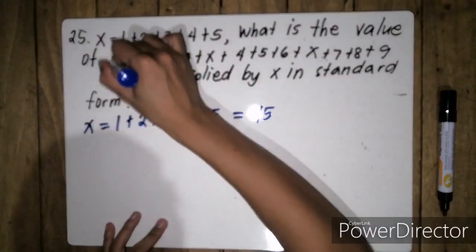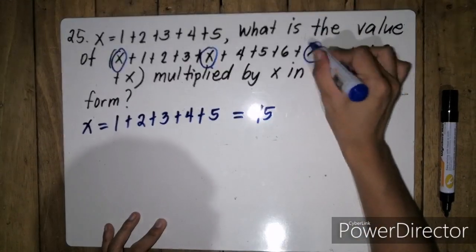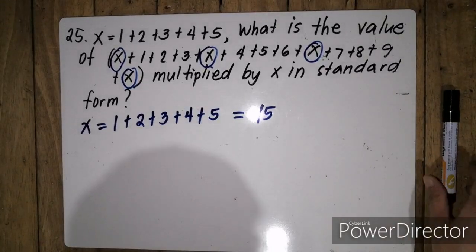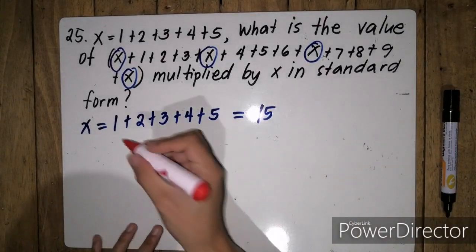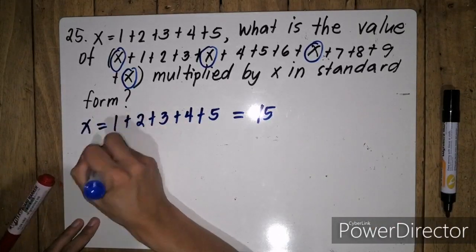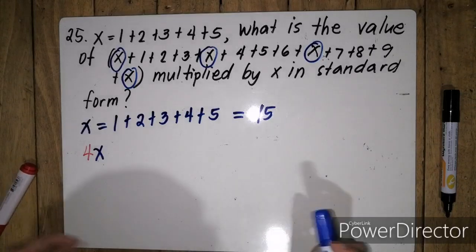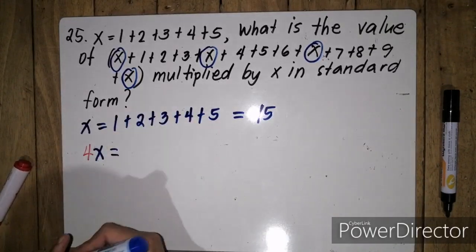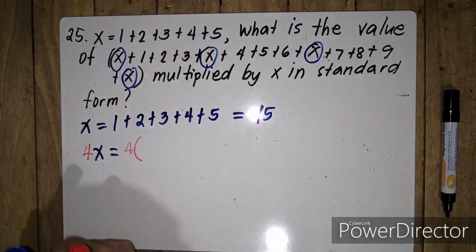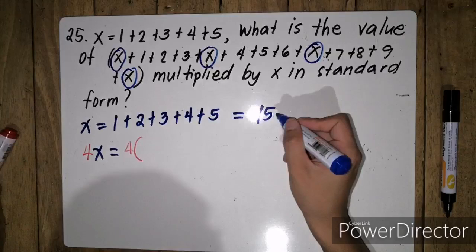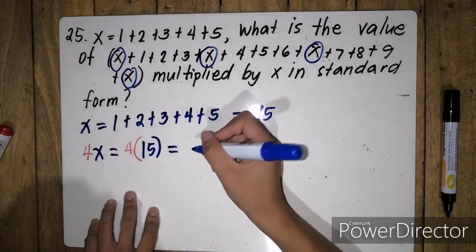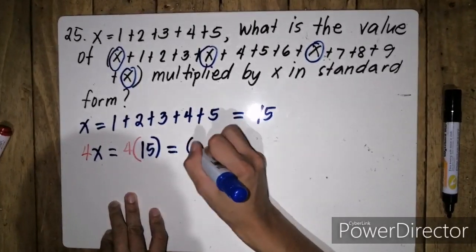We're just going to remove this x first. So ilang x meron tayo? We have 4x. And that's simply equivalent to 4 multiplied by the value of x is 15. So that's simply 15, which is equal to 60.